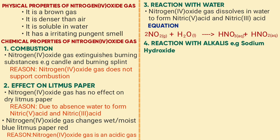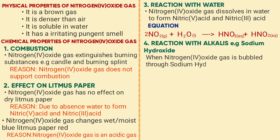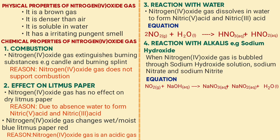Reaction with alkalis — example: sodium hydroxide. When nitrogen dioxide is bubbled through sodium hydroxide solution, sodium nitrate and sodium nitrite are formed. The equation is: 2NO₂ + 2NaOH → NaNO₃ + NaNO₂ + H₂O. Balance the equation: place two where there is nitrogen dioxide.